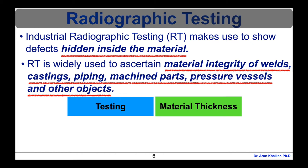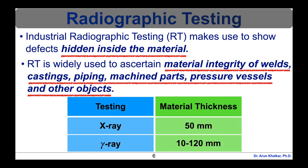In many cases, radiographic testing can also be used to inspect industrial installations that are in operation. X-ray testing is possible for materials with a maximum thickness of 50 mm, and gamma ray testing is possible for materials with a thickness varying from 10 to 120 mm.